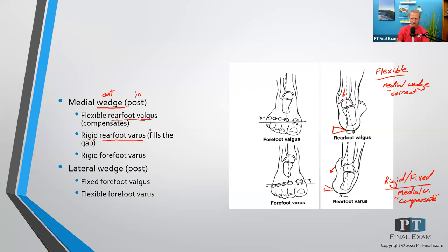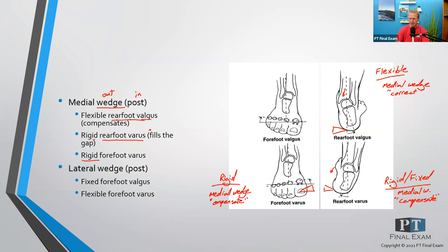For a rigid forefoot varus, we're going to place a medial wedge. In the case of a rigid forefoot varus, there's not a lot of flexibility or pliability, so placing that medial wedge has the same effect as with the rearfoot varus — we're going to fill the gap. This is going to compensate for the problem by filling in the space on the medial side of the foot.